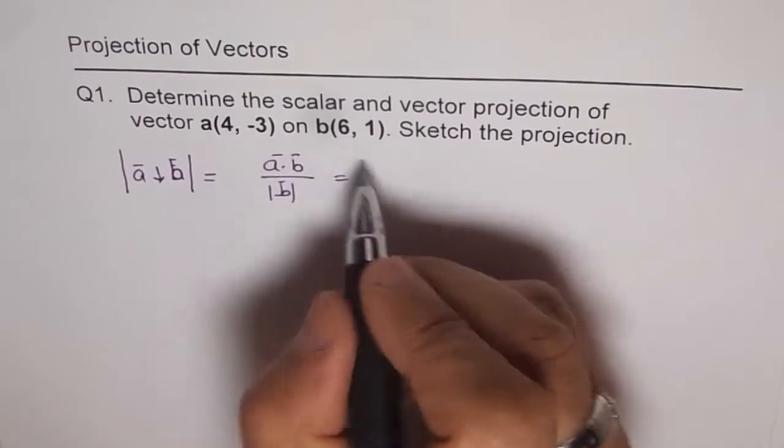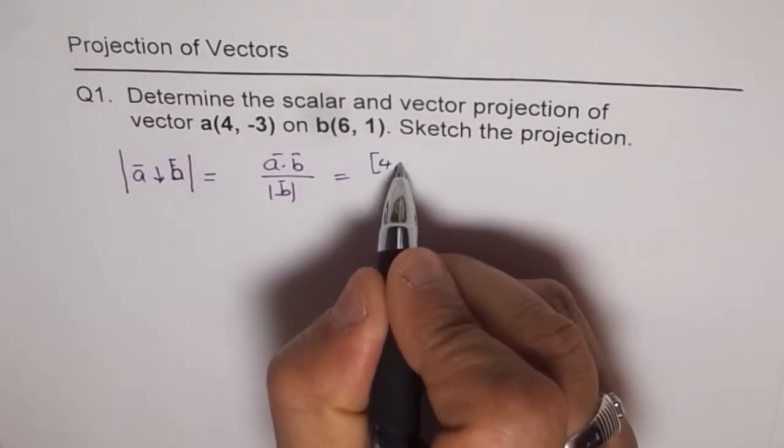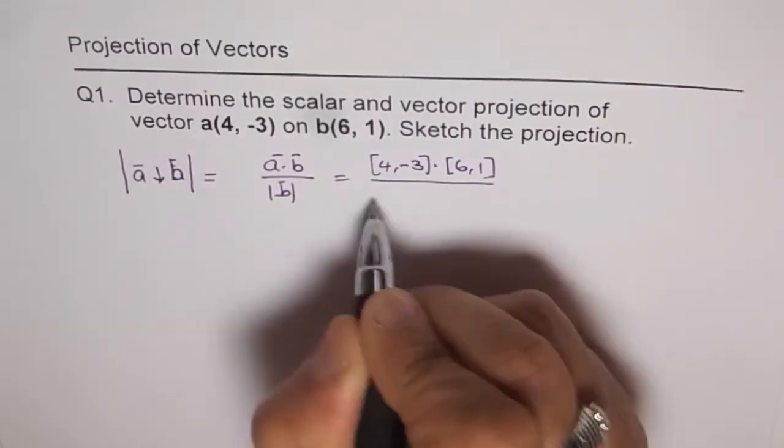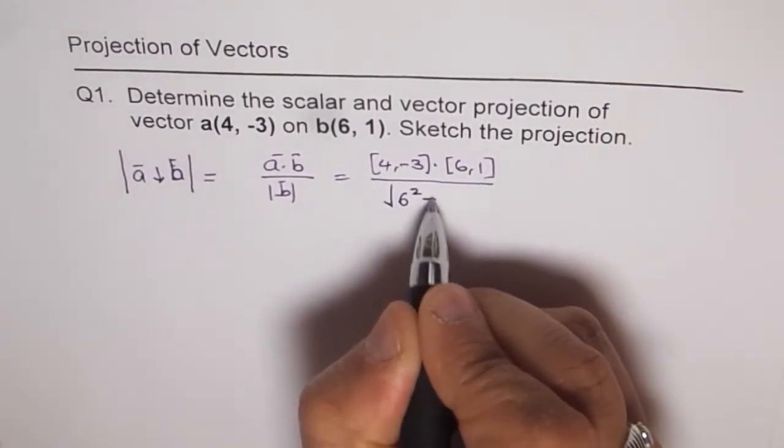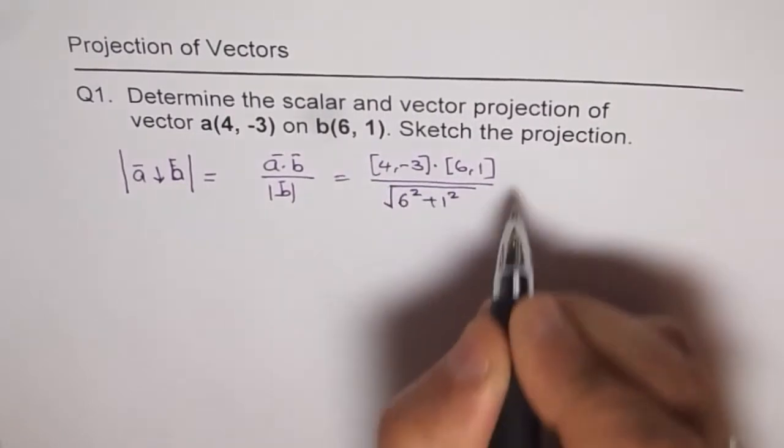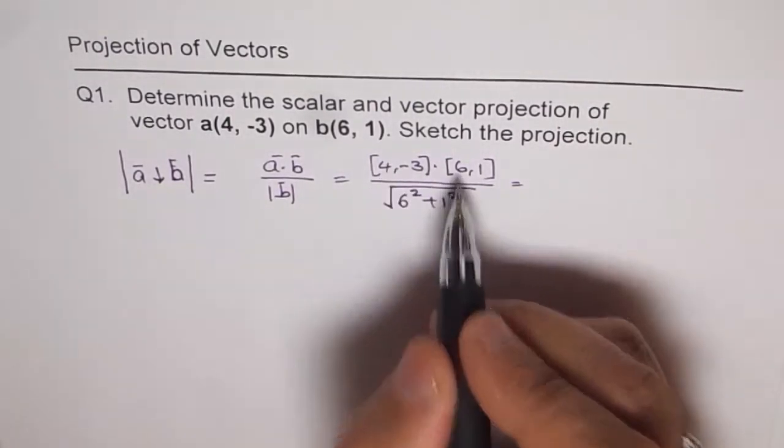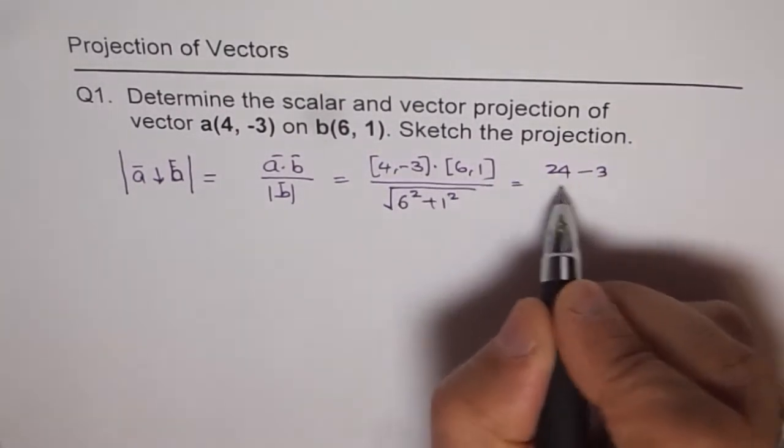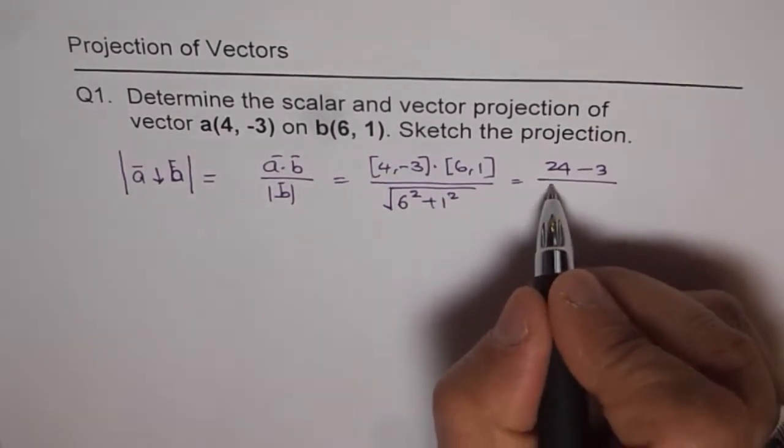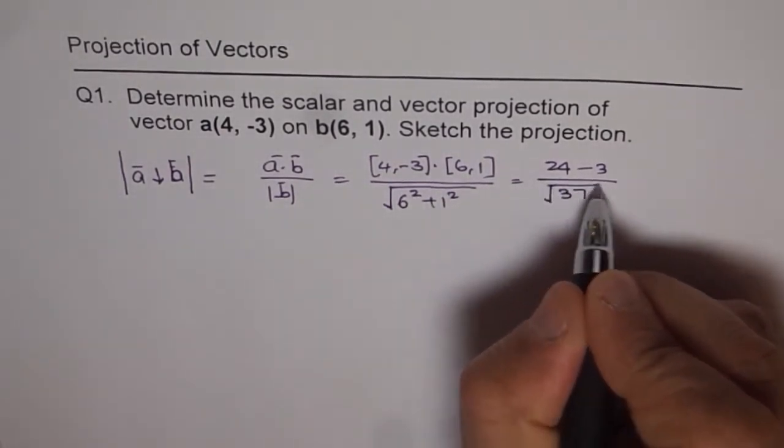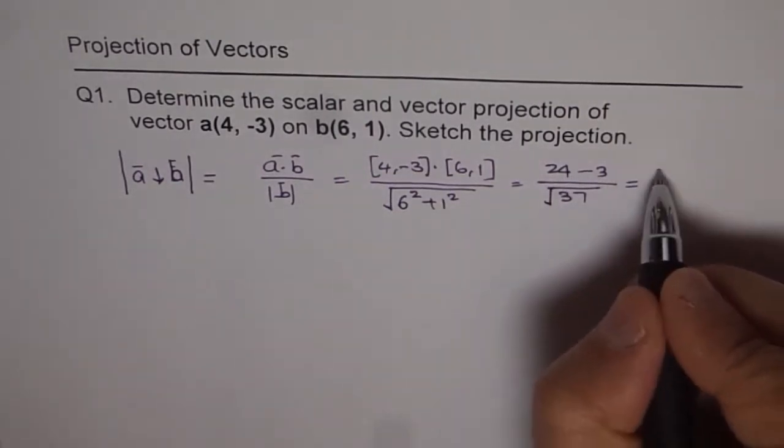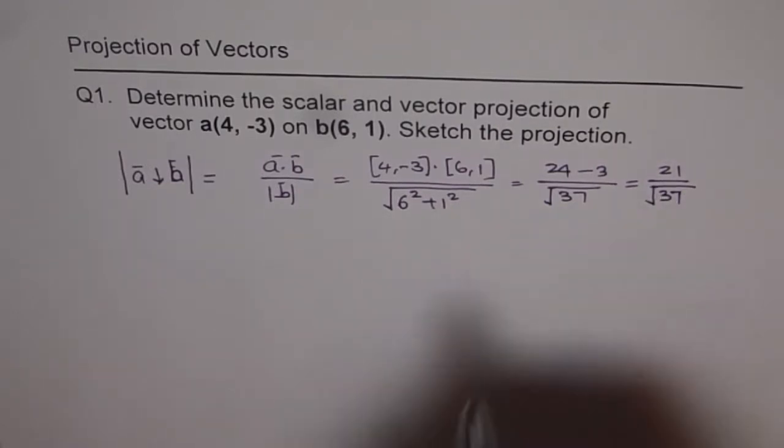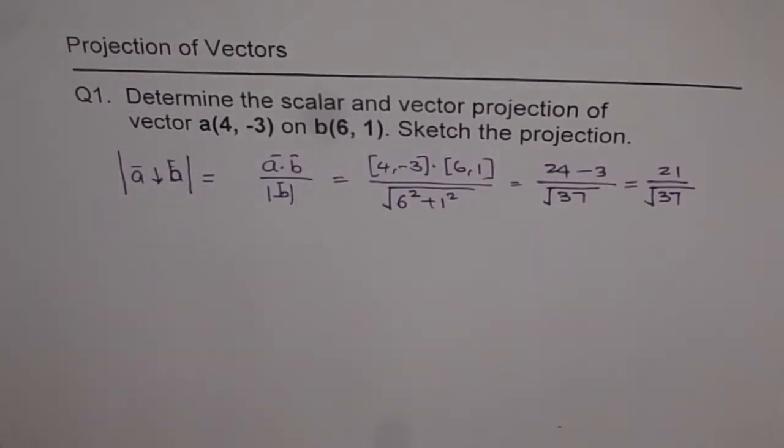And this is a scalar projection. So A dot B, which is (4,-3) dot (6,1), and the magnitude of B is square root of 6 squared plus 1 squared. Now, A dot B is 4 times 6 is 24 minus 3 times 1 over 36 plus 1 gives me 37. So that gives me the result, which is 21 over square root of 37. So that is scalar projection.